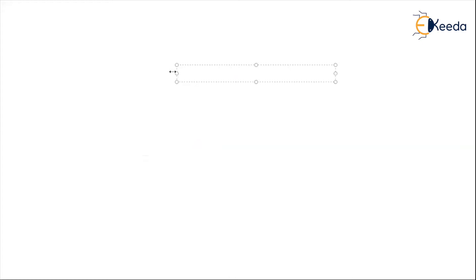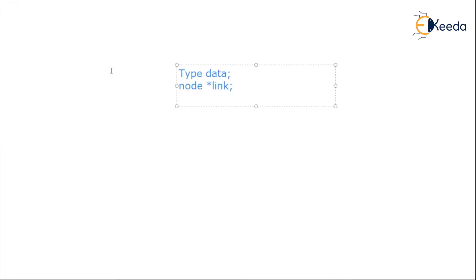A linked list node is a record with two parts: one variable of type data and one node variable called link. The node variable 'link' is actually a pointer which points to the next node — that means the link is getting connected to the next node's link. So it is a pointer variable that we use as the link between nodes.